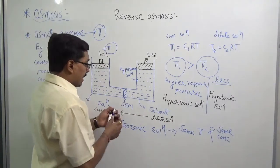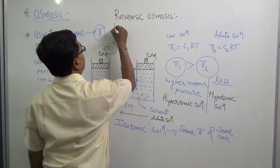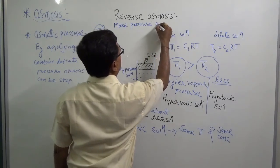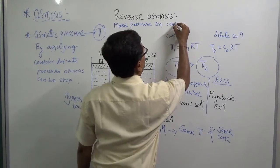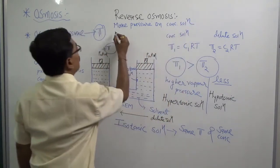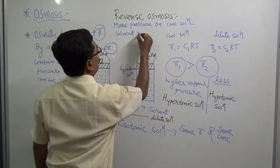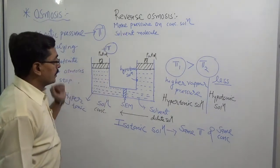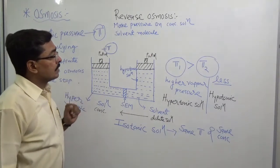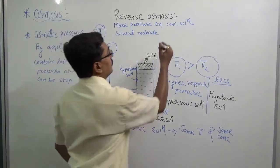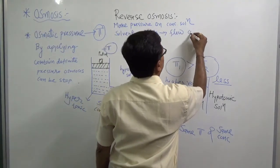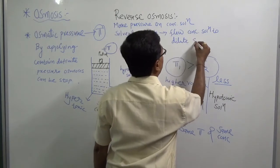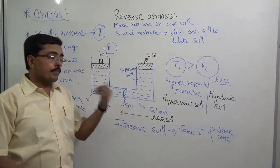When we apply more pressure on the concentrated solution side — a pressure greater than the osmotic pressure — it is observed that solvent molecules in reverse osmosis will flow from the concentrated solution to the dilute solution. This flow is opposite to normal osmosis, and such a phenomenon is known as reverse osmosis.